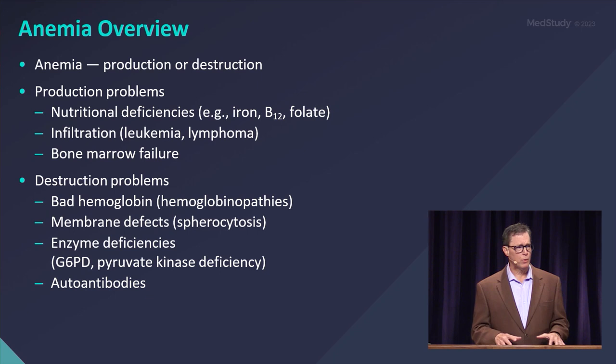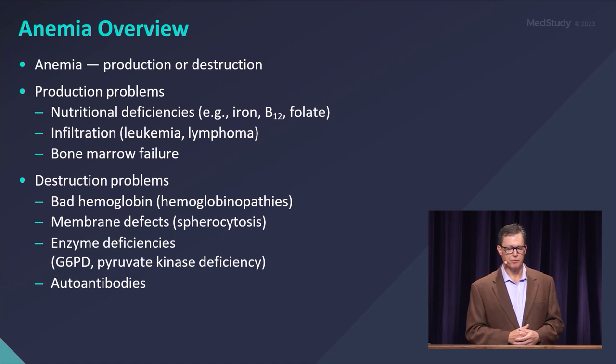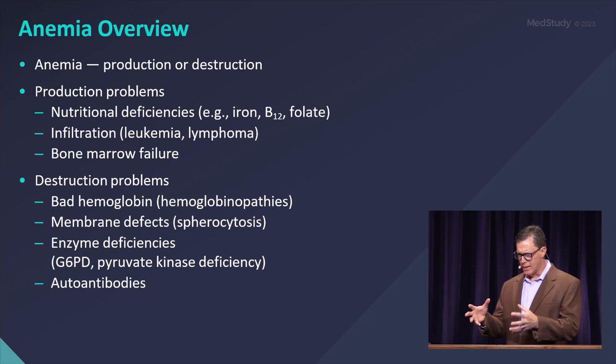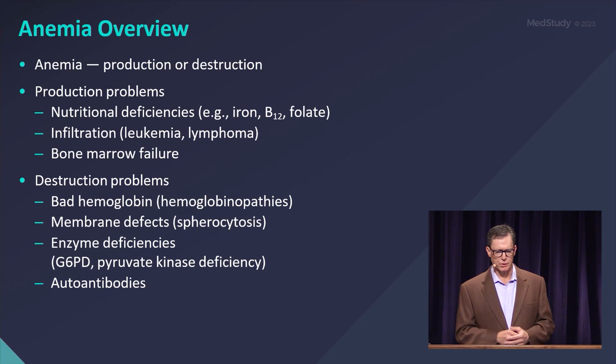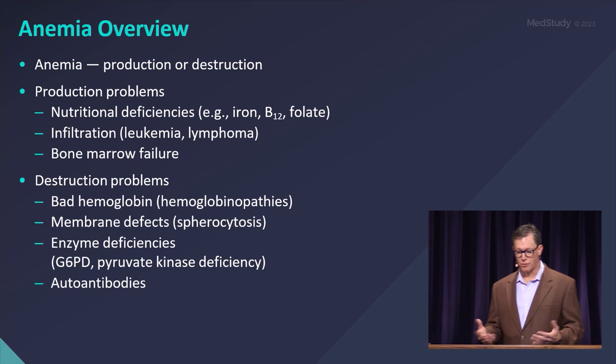On the other side of the coin, destructive processes. So hemoglobinopathies — spherocytosis is a classic example of a membrane defect. Enzyme deficiencies: if you think of the red blood cell, basically anything inside of it that can be broken may lead to a medical disorder. So enzyme deficiencies — we think of G6PD, pyruvate kinase deficiency — and then things extrinsic to the red cell itself, such as immune-mediated mechanisms and autoantibodies, are destructive processes.